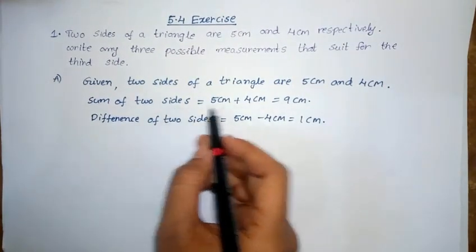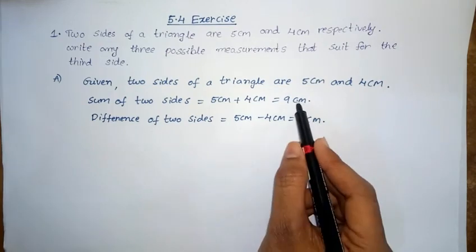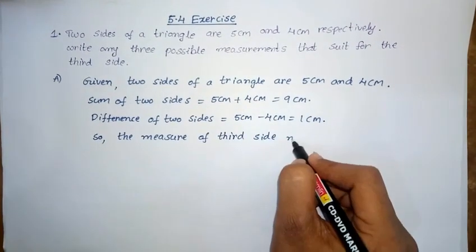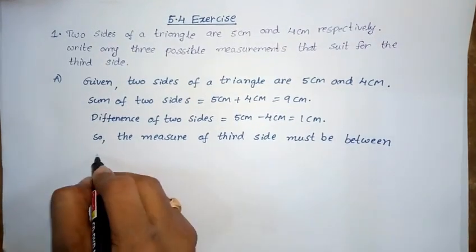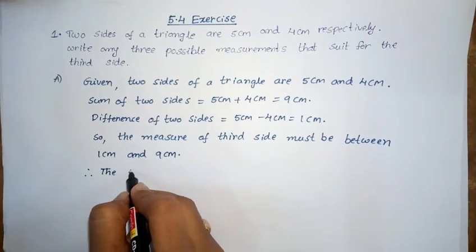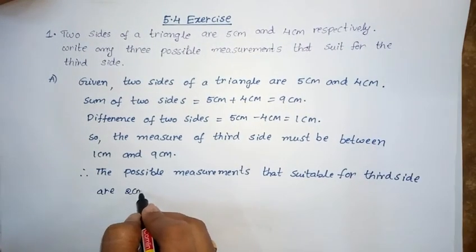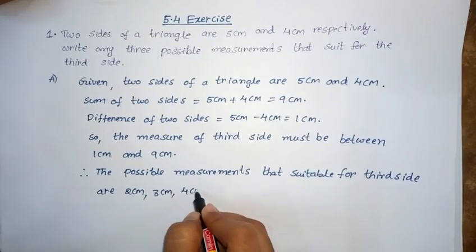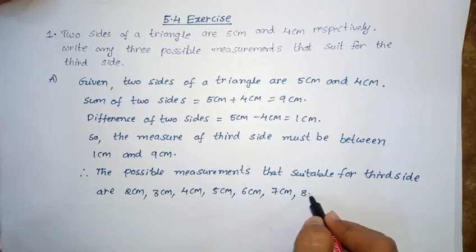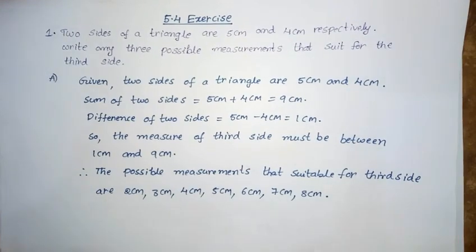The sum of the two sides is 9 cm and the difference of two sides is 1 cm. So the third side must lie between 1 cm and 9 cm. Therefore, the possible measurements for the third side are 2 cm, 3 cm, 4 cm, 5 cm, 6 cm, 7 cm, 8 cm. These measurements are possible for the third side. This is the solution of the first problem.